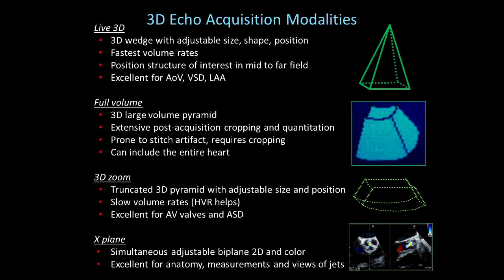3D Zoom is the third acquisition modality — a truncated 3D pyramid with adjustable size and position. It works very well for horizontally oriented structures but tends to have a very slow volume rate. Volume rate is the same as frame rate; in 3D we say volume rate. HVR is a setting on the 3D ops button — that's high volume rate — which can mitigate some of the slow volume rates encountered with 3D zoom.